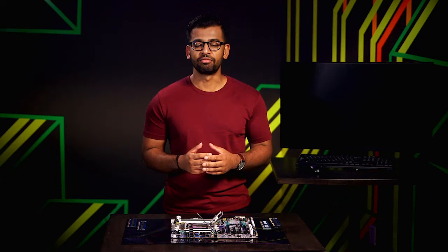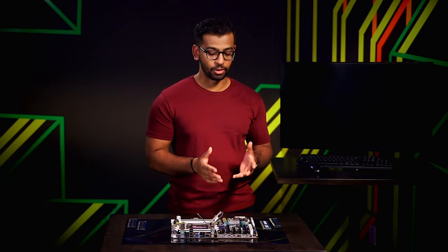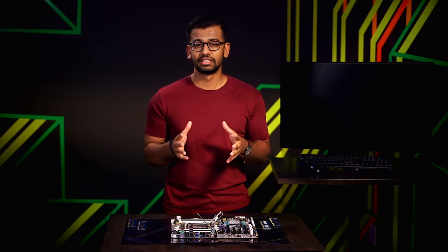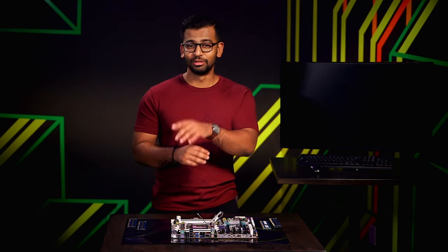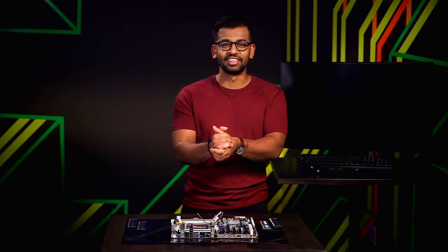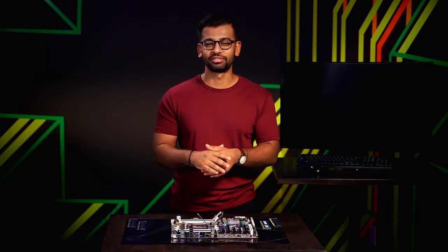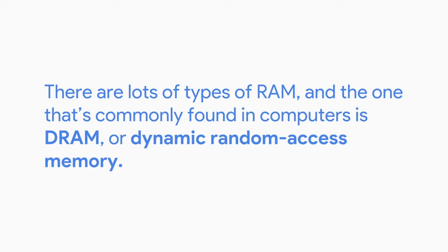Have you ever gone on a long gaming campaign without saving, and right as you get to a save point, the power goes off and all your progress is lost? All of this happens because RAM clears its data when powered off. There are lots of types of RAM, and the one commonly found in computers is DRAM, or Dynamic Random Access Memory. When a 1 or 0 is sent to DRAM, it stores each bit in a microscopic capacitor — either charged or discharged, represented by 1 or 0. These semiconductors are put into chips on the RAM and store our data.